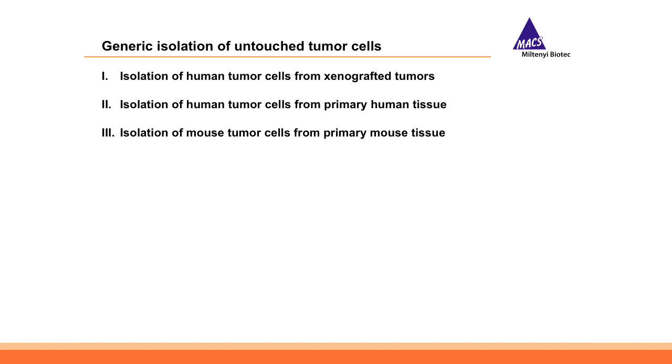We have three main objectives: isolate human tumor cells out of xenograft tumors, isolate human tumor cells out of primary human tumors, and isolate mouse tumor cells out of syngeneic or genetically engineered mouse tumors. The first and second methods are already released to market; the third is in the last phase of development and will be released around mid-year.